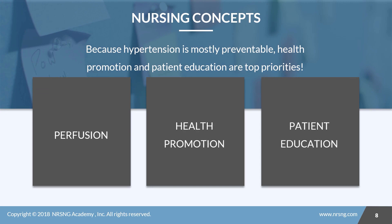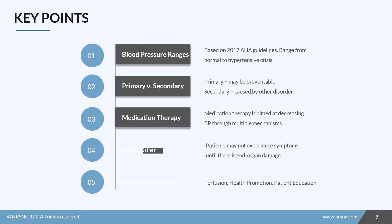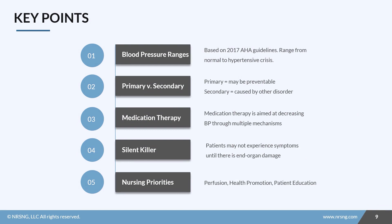We'll cover more specific nursing interventions in the care plan attached to this lesson. The top three priority concepts are perfusion — since this is fundamentally a perfusion issue — and then health promotion and patient education, which are key roles for us as nurses. Remember: normal blood pressure ranges have been shifted down recently for earlier intervention, secondary hypertension is caused by another disorder while primary is manageable and possibly preventable, patients on medications are typically on at least two, and patients may not experience any symptoms until there's end organ damage, so monitoring is critical.